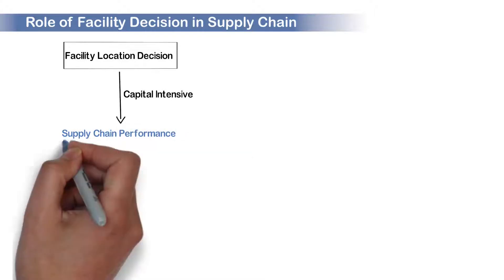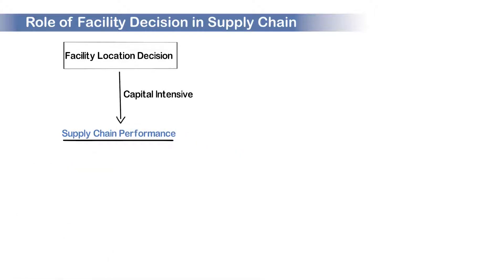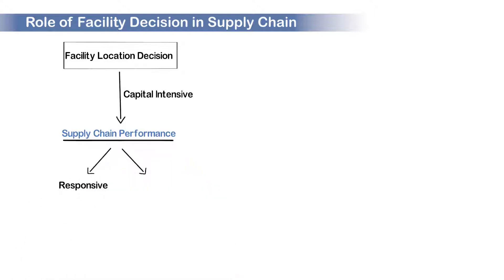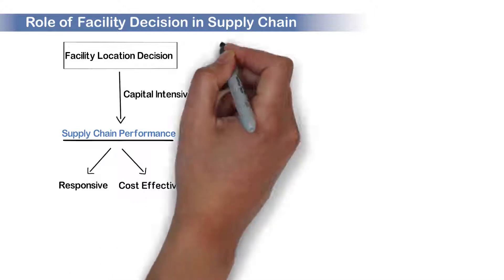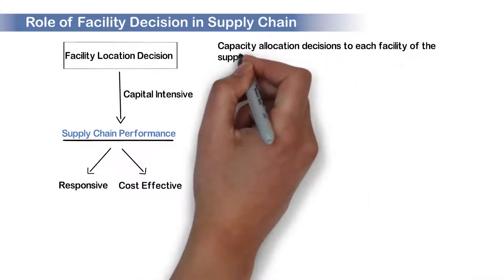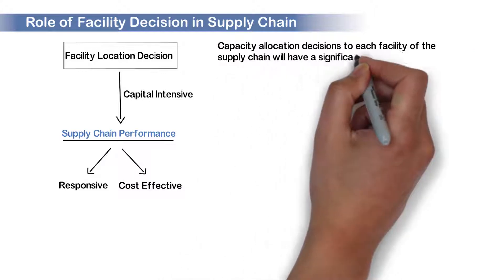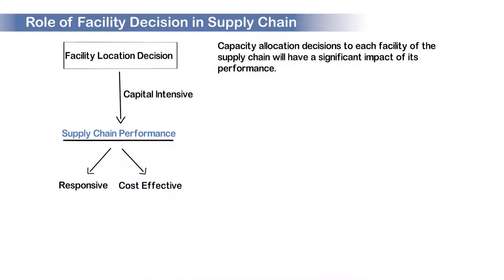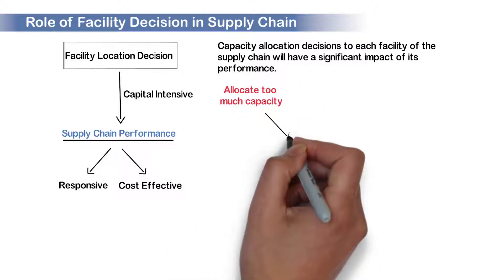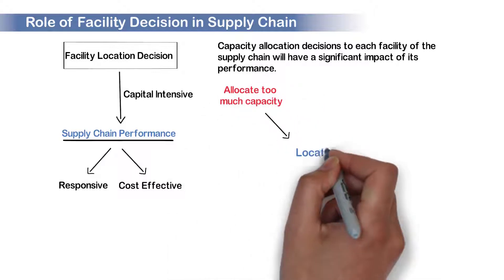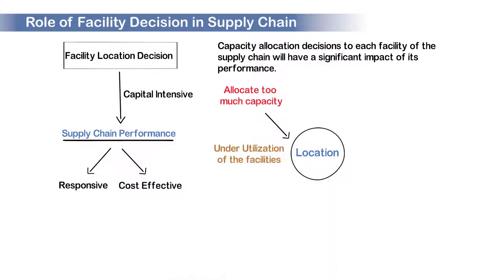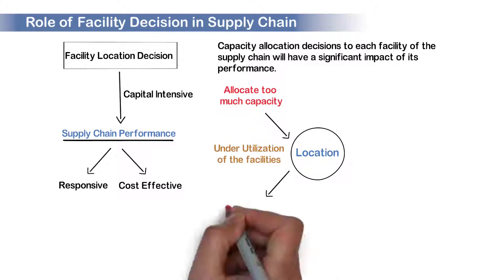A facility location decision is capital intensive, which will impact the supply chain performance. A good facility decision will always help the supply chain to be responsive, as well as be cost effective. Capacity allocation decisions to each facility of the supply chain will have a significant impact on its performance. When we allocate too much capacity to a particular location in a supply chain, it may result in underutilization of the facilities, which may result in higher cost.